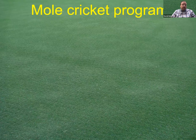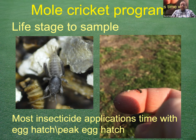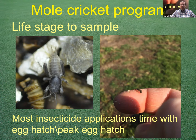The key question in a mole cricket program is figuring out what life stage to sample and target. Most insecticide labels say to target applications at egg hatch or peak egg hatch. What does that mean when all this is happening below ground? You're really looking for that small mole cricket — the one shown on my finger in the picture — that's the stage most insecticide labels say you should target.